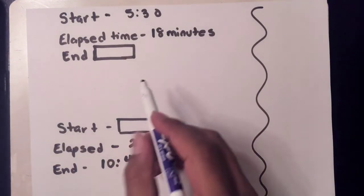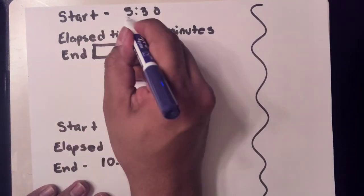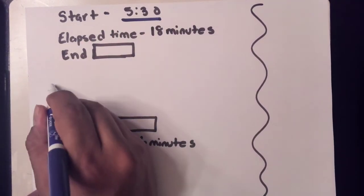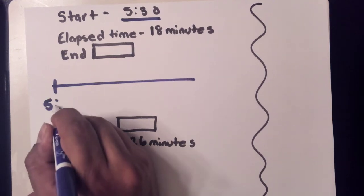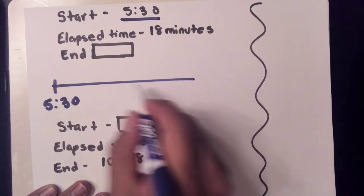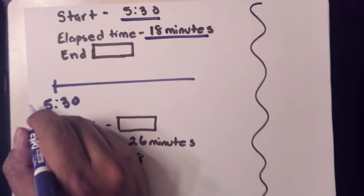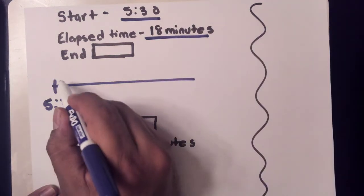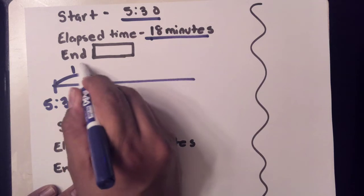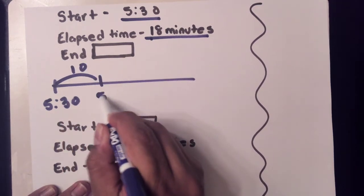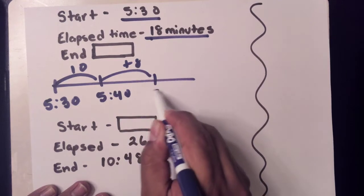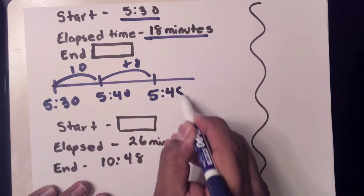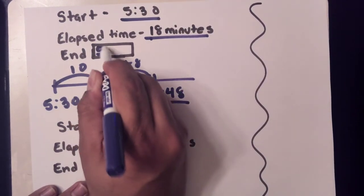So again, you have the starting time, but we're missing the ending time. You add how many minutes it took you to do whatever activity you're doing. I need to add 18, so I'm going to add 10, and then I'm going to add 8. My answer is 5:48.